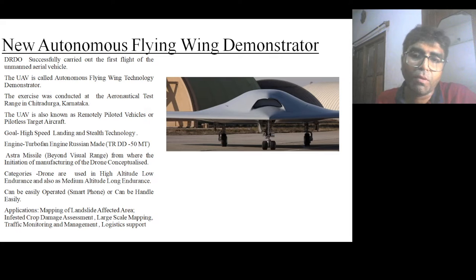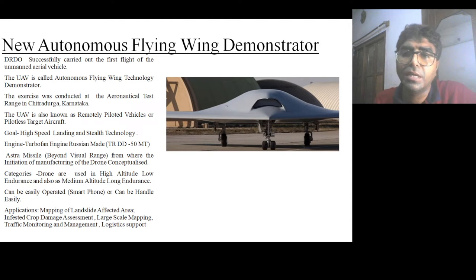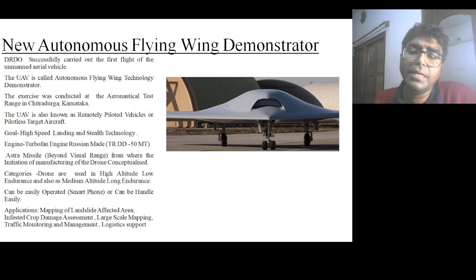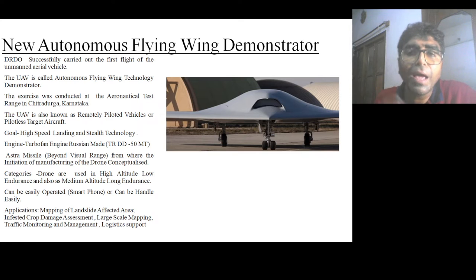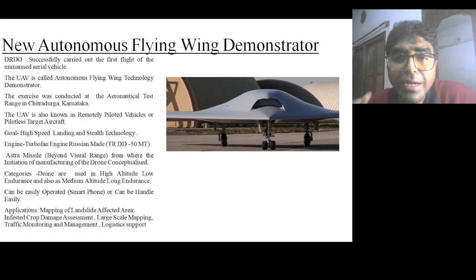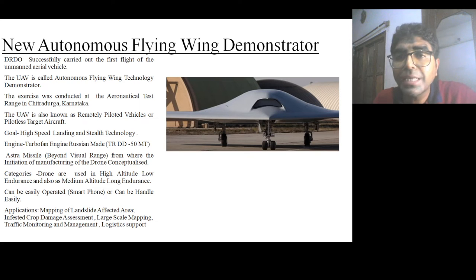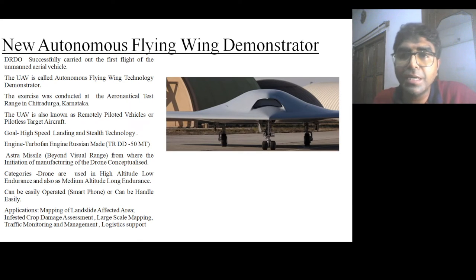Now let's talk about the features of this drone. The first feature is that it has stealth technology. Stealth technology is a technology to camouflage something. If from our opponent's side any radar is directed at the drone, this drone, having stealth technology, will absorb the radar rays and infrareds. It then reflects the remaining waves in different directions — 80 percent of the radar rays are absorbed and the remaining 20 percent are deflected in different directions.